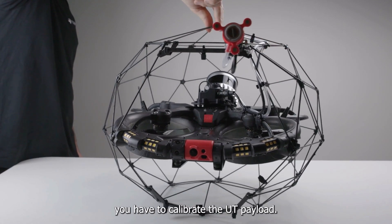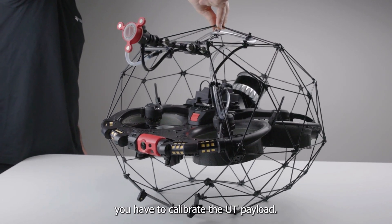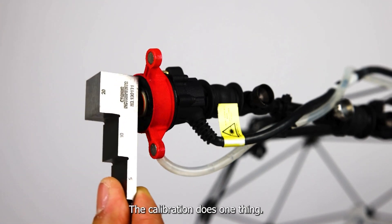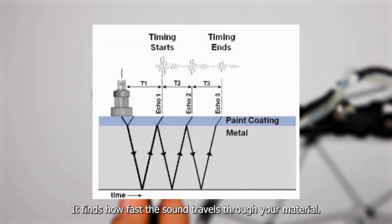Before performing your inspection, you have to calibrate the UT payload. The calibration does one thing: it finds how fast the sound travels through your material.